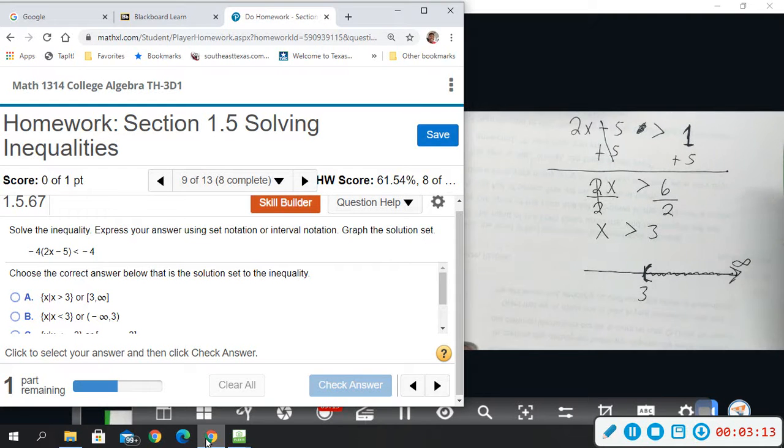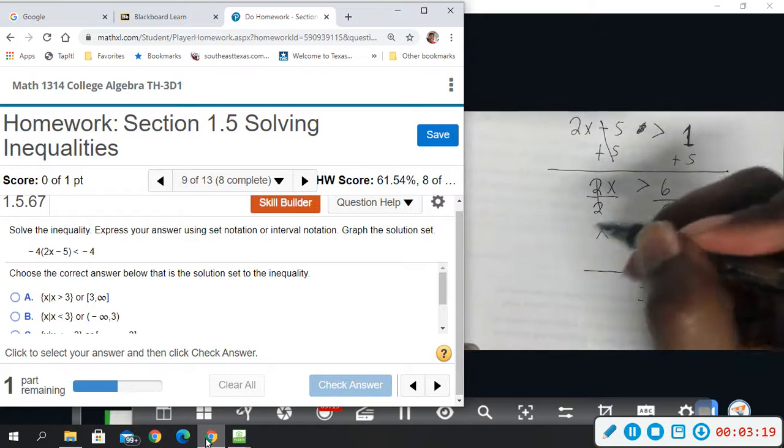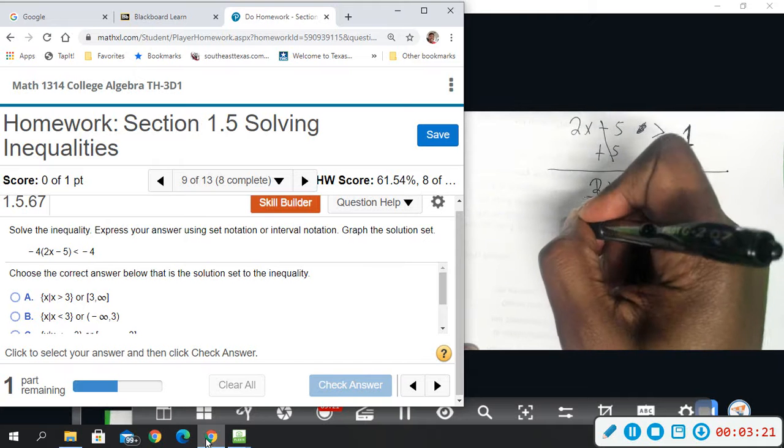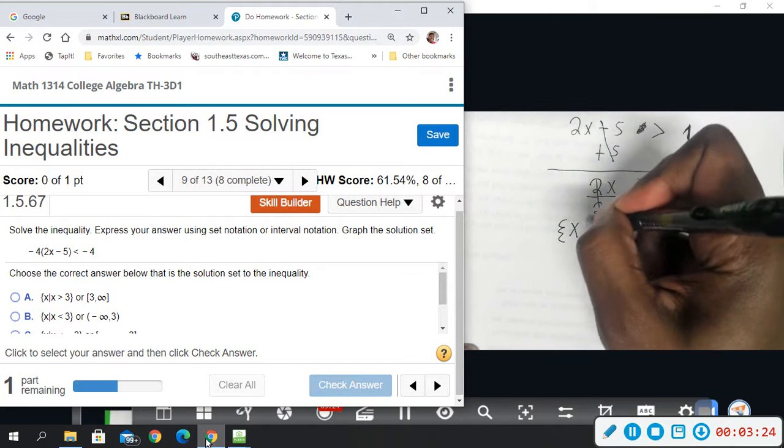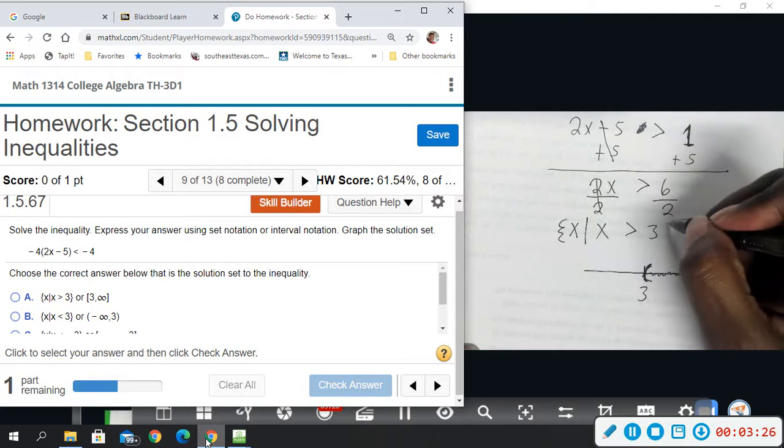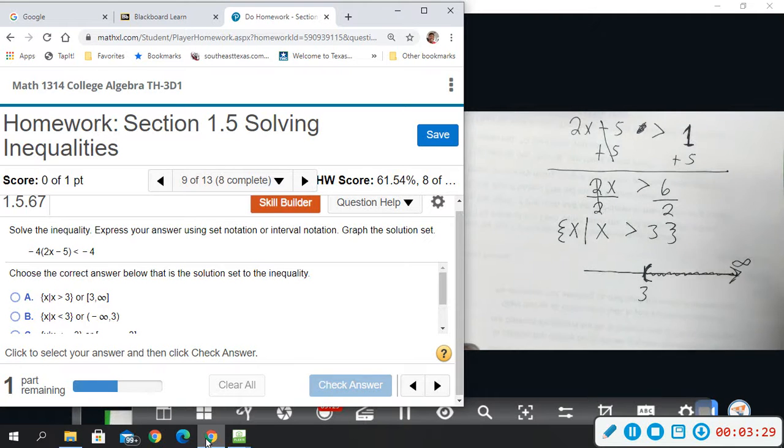If I wanted to do set notation, all you have to do is add curly bracket, your variable, a vertical bar, and then curly bracket. This is set notation. Interval notation, I pick that up from the number line. That's why I did the number line. We're going from 3 to infinity. We always go from smallest to largest. So in parentheses, 3, comma, and then infinity. And you always do parentheses around infinity.